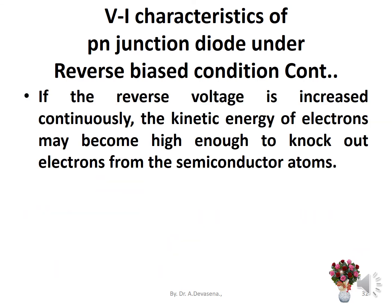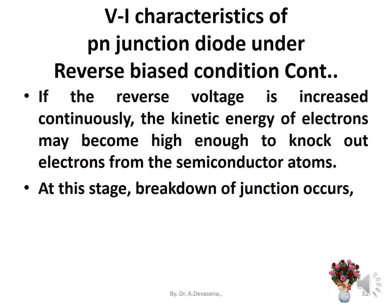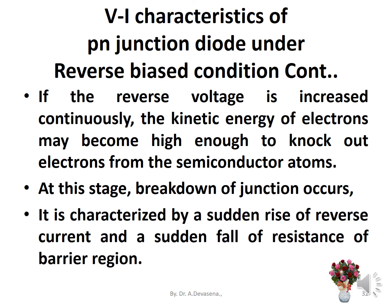If the reverse voltage is increased continuously, the kinetic energy of electrons may become high enough to knock out electrons from the semiconductor atoms. At this stage, breakdown of the junction occurs. It is characterized by a sudden rise of reverse current and a sudden fall of resistance of the barrier region.